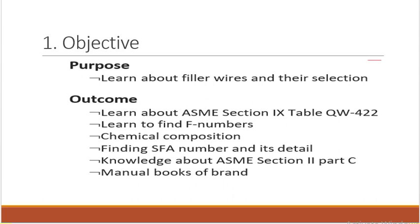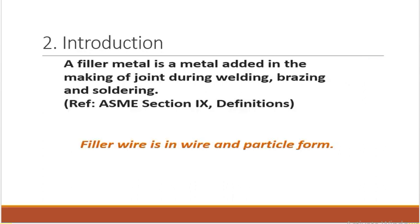Introduction: a filler metal is a metal added during the making of a joint during welding, brazing, or soldering. When we are doing welding, an arc is created and the filler metal is added into the arc. The heat input melts the filler metal and it comes together to form a joint — this is called welding, brazing, or soldering. The reference is ASME Section 9 definitions. Filler wire is in wire and particle form.